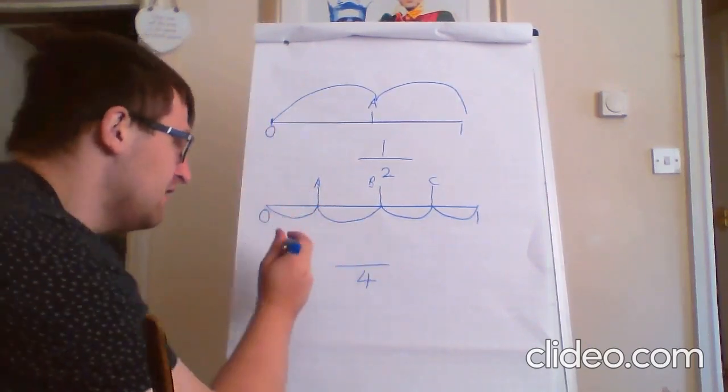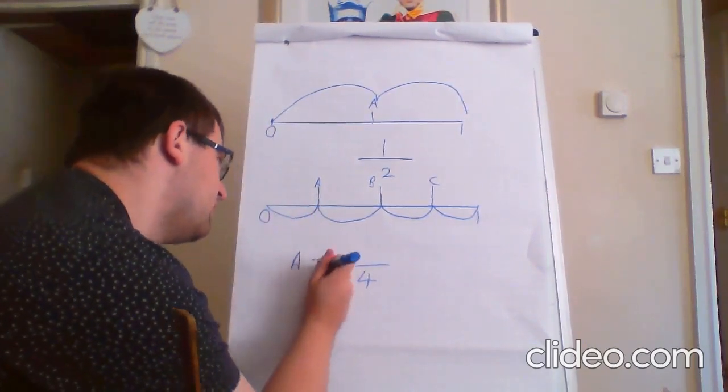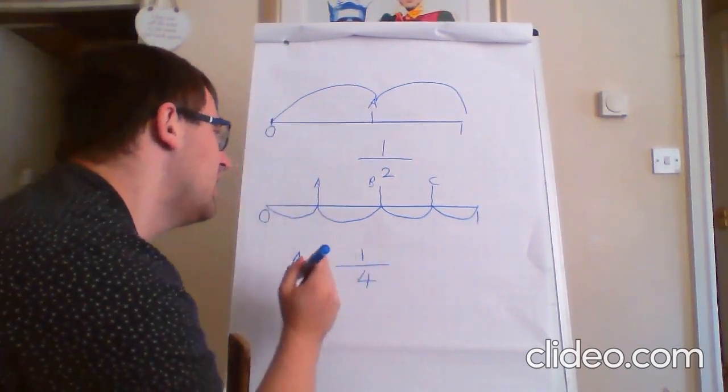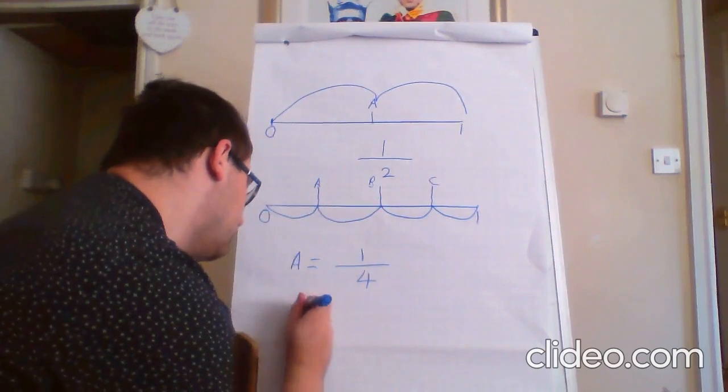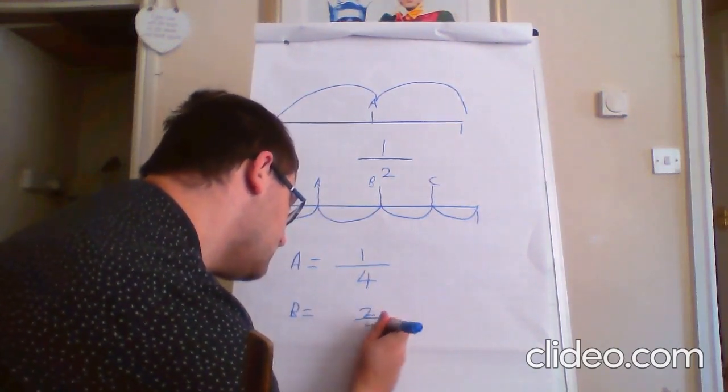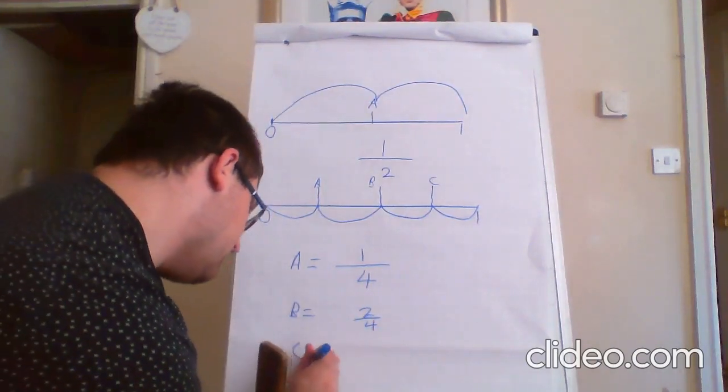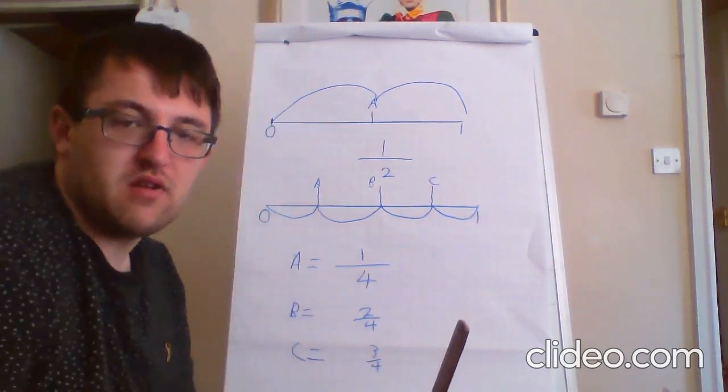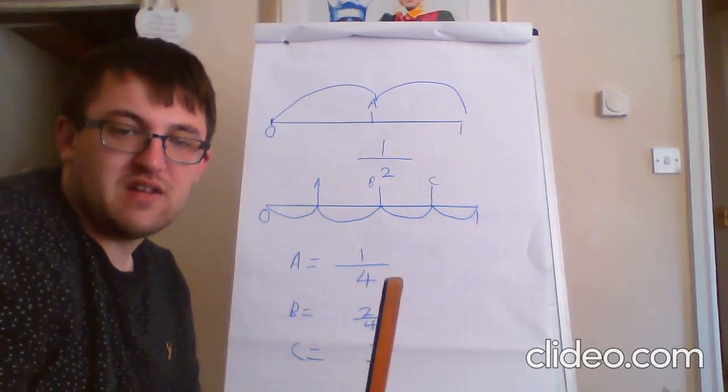So, A would be equal to one quarter. B would be equal to two quarters. And C would be equal to three quarters. Does that make sense? Hopefully, it does.